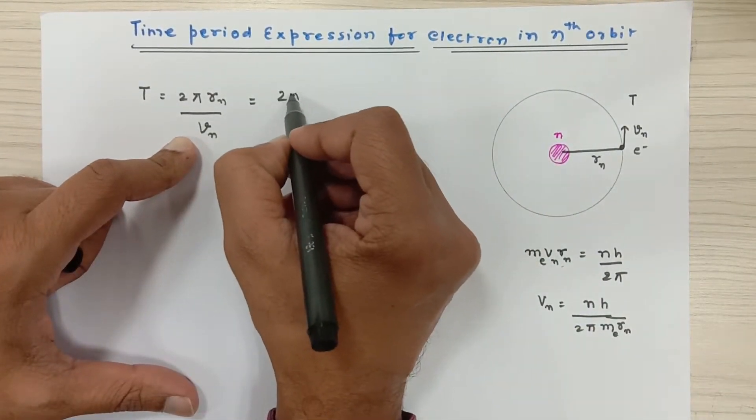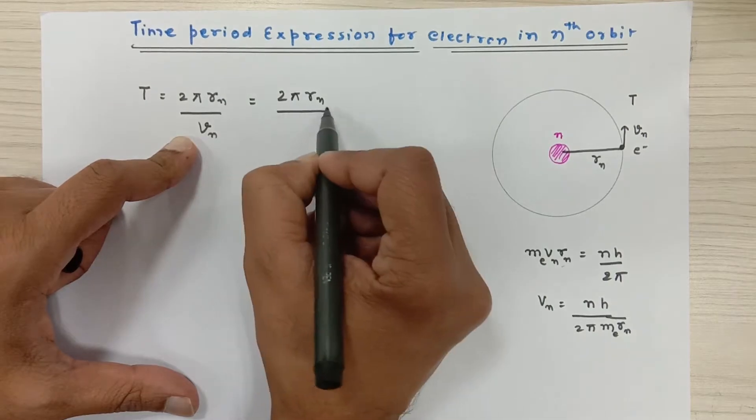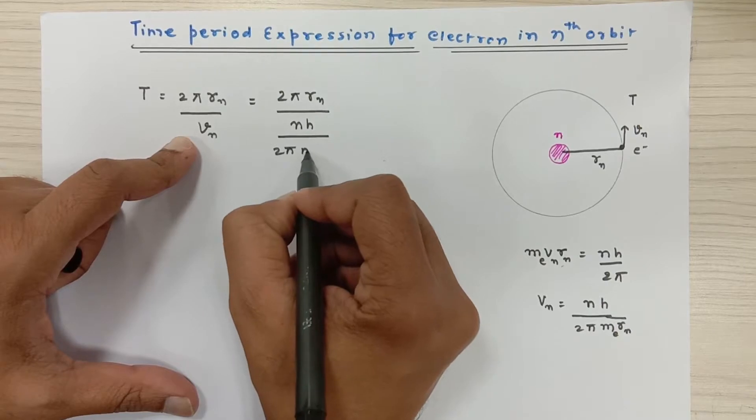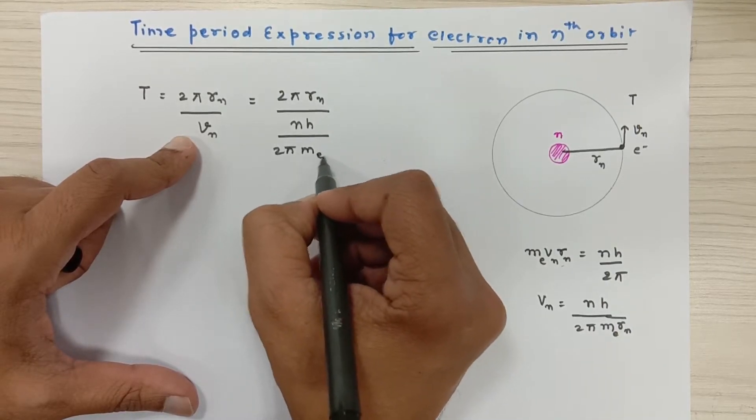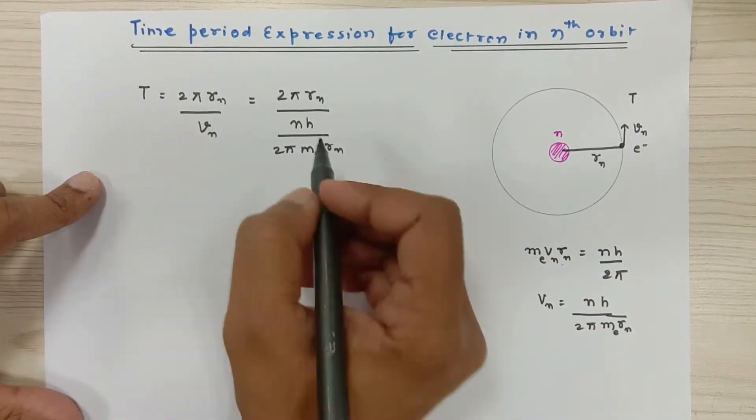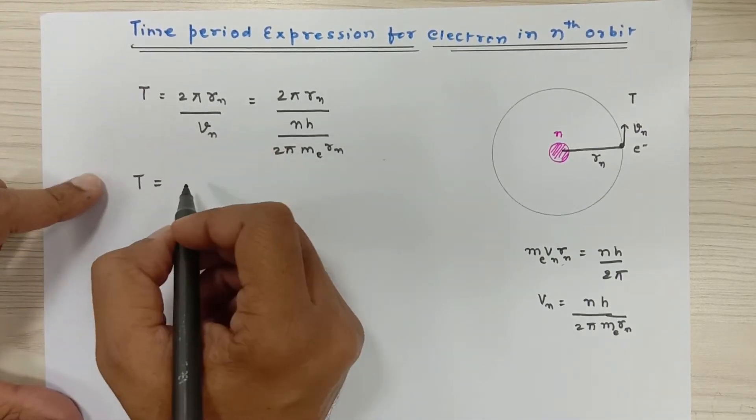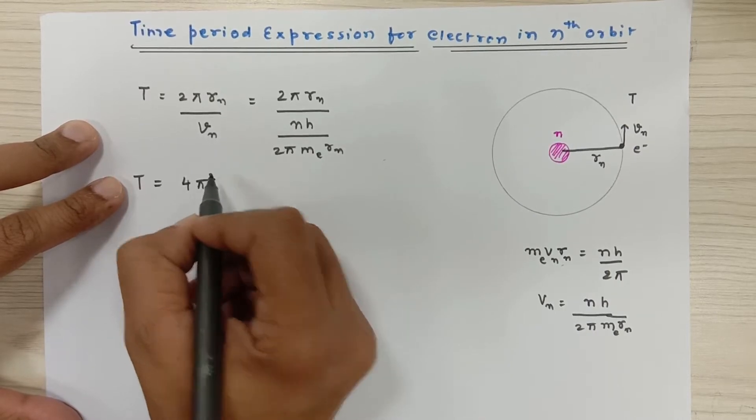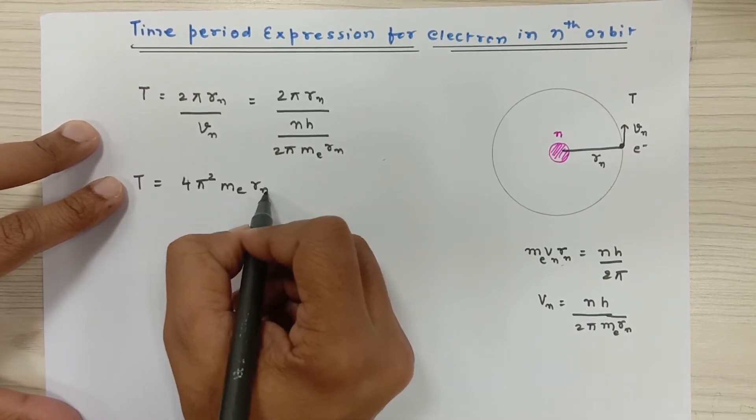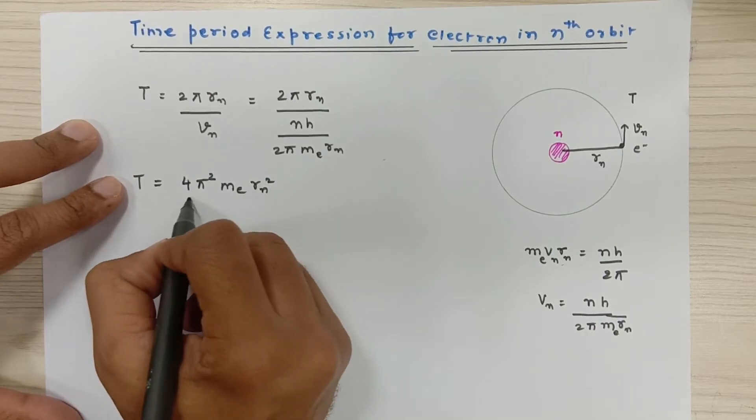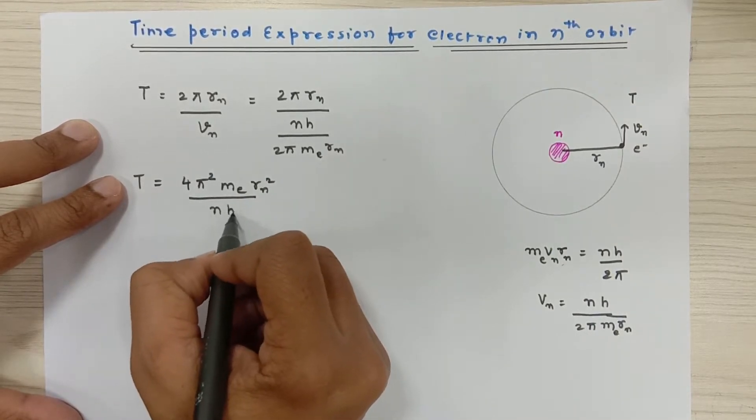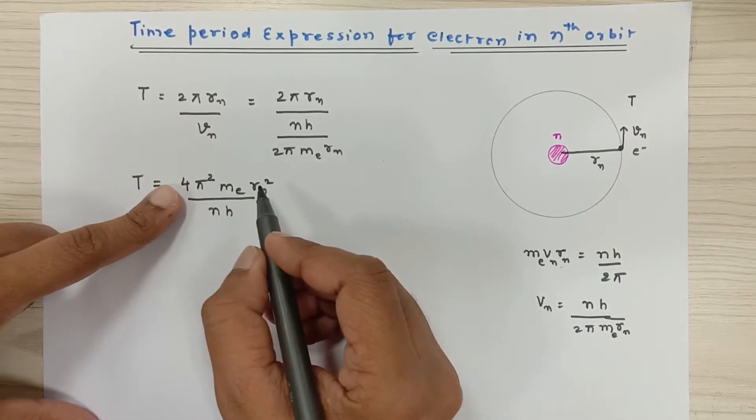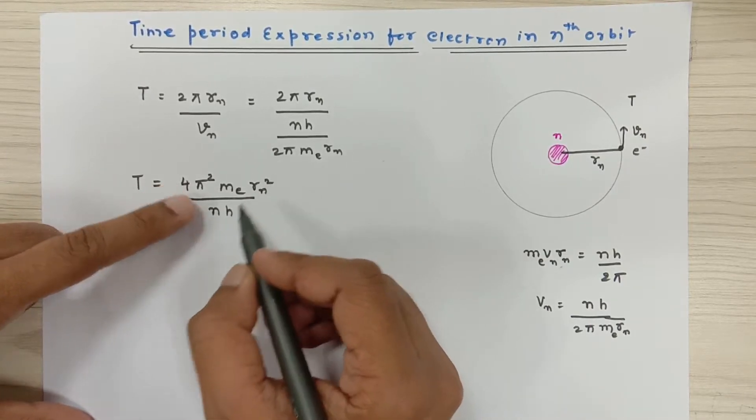So time period becomes 2πrn upon nh upon 2π mass of electron into rn. So this expression of time period actually becomes 4π²mₑrn² upon nh. So this is our time period expression, but still it has one variable, that is radius.